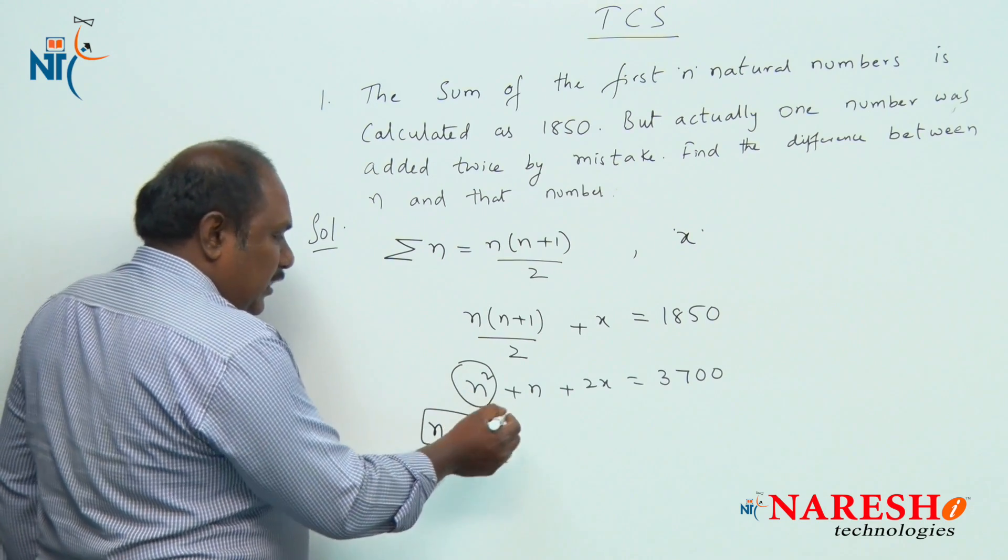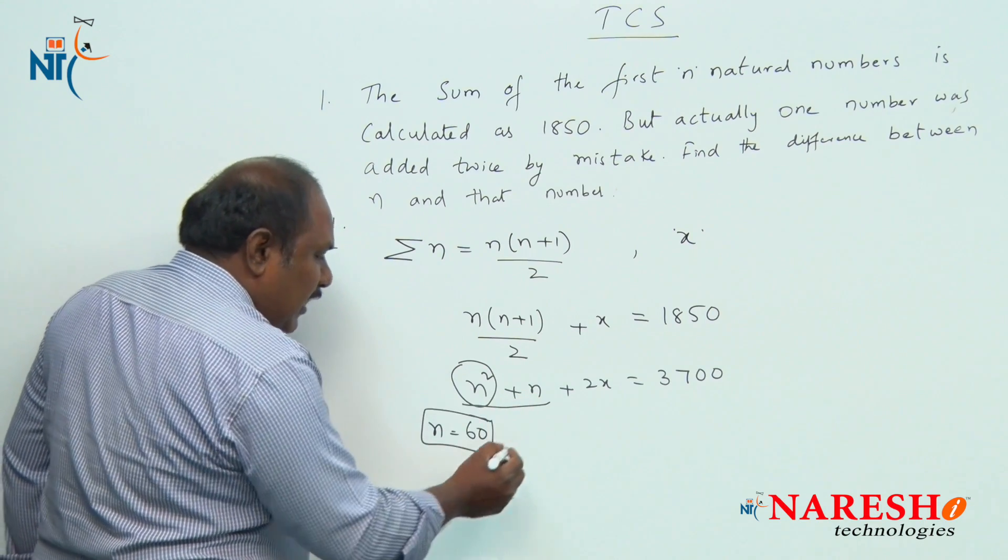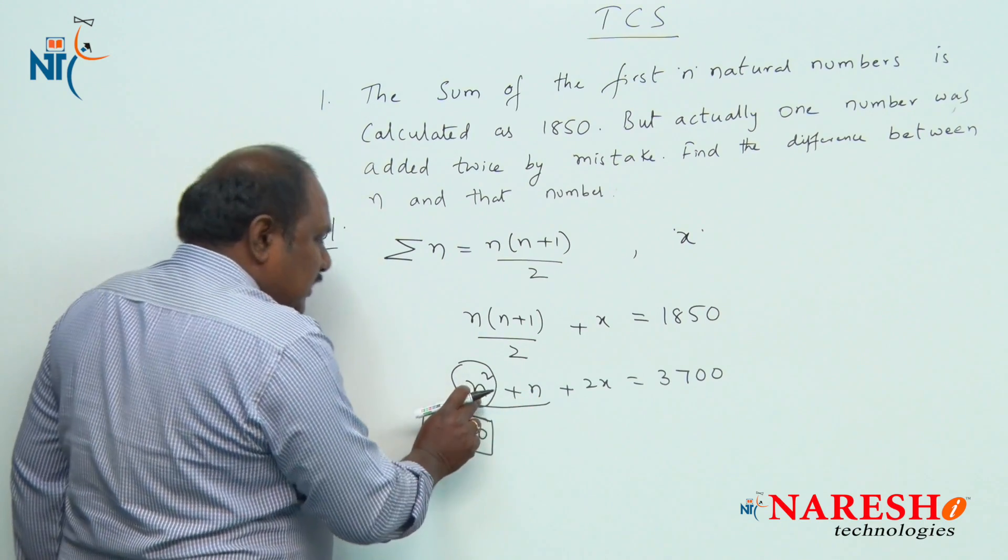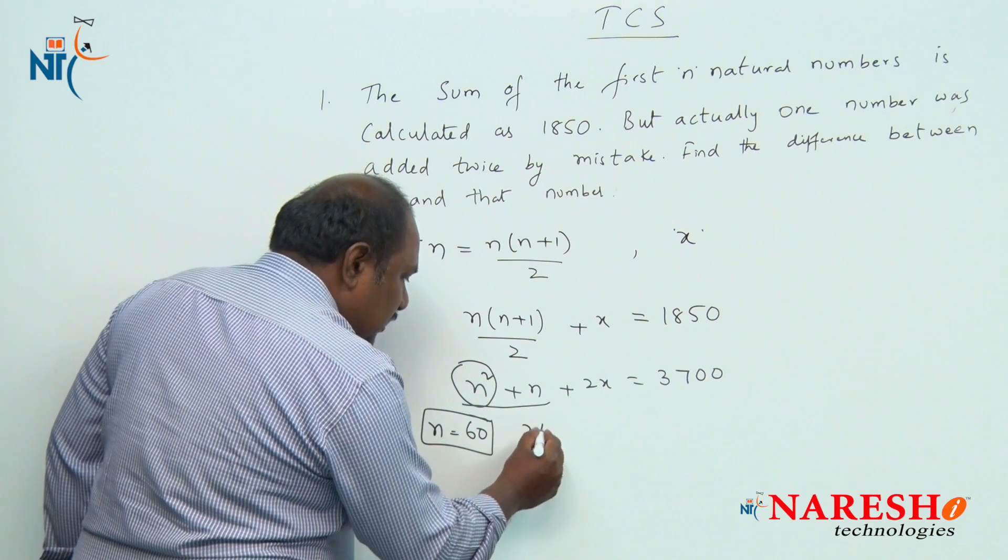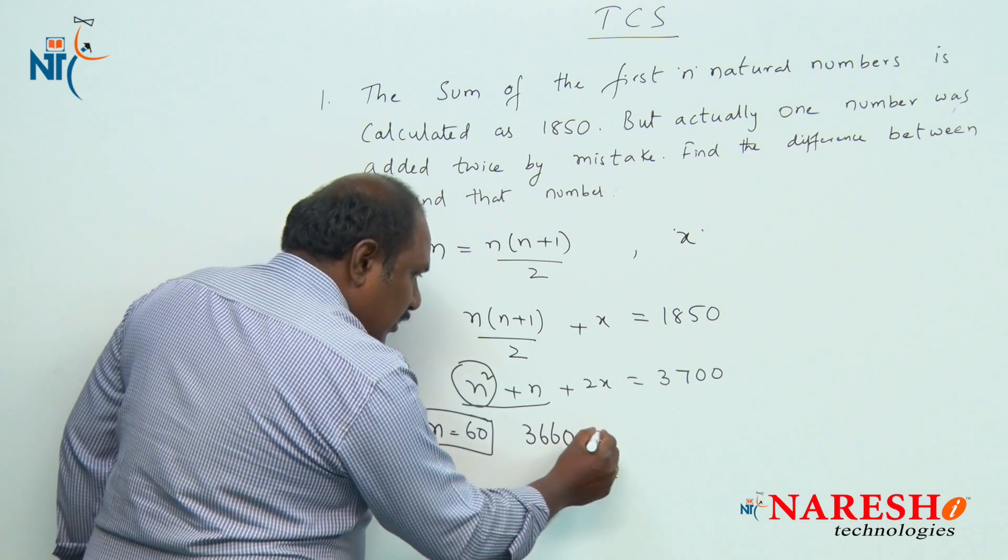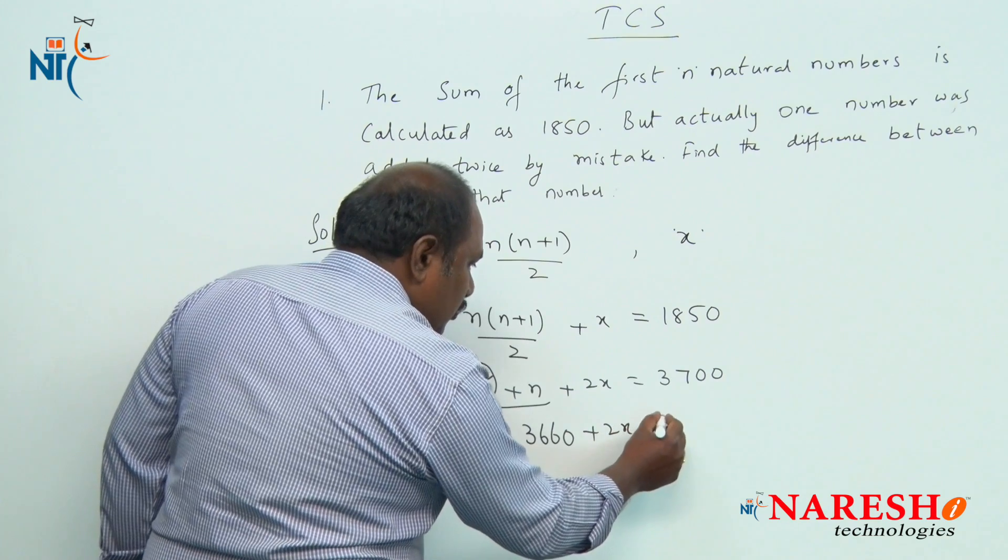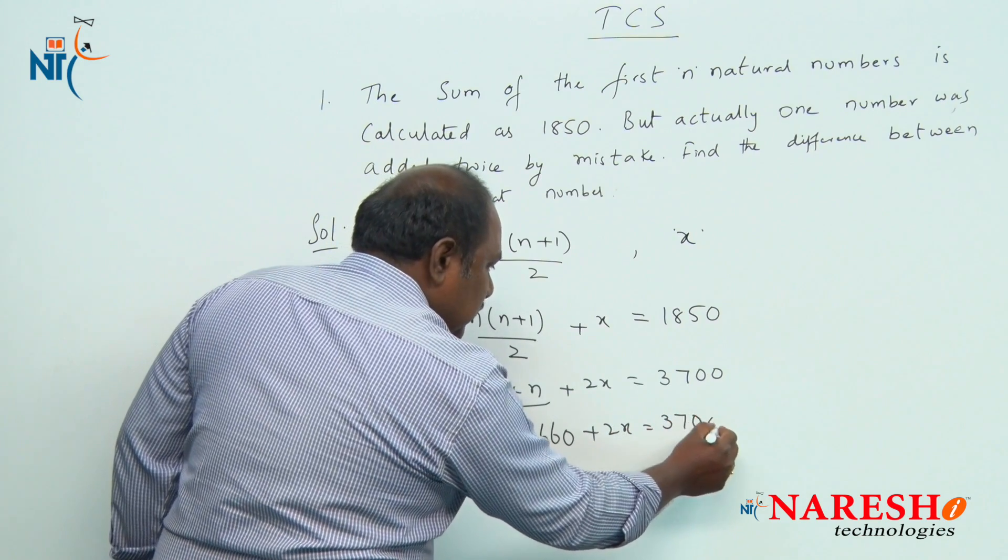If the value of n is 60, n square plus n value should be 3600 plus 60, that is 3660 plus 2x should be equal to 3700.